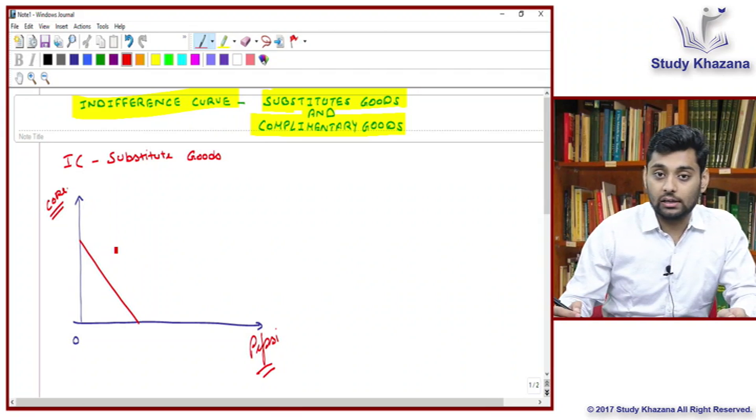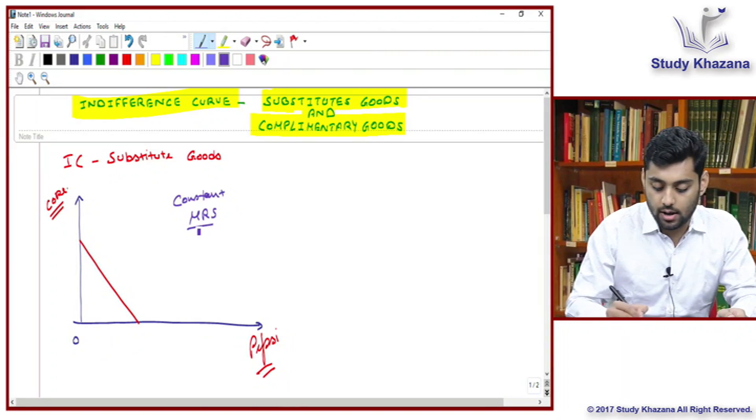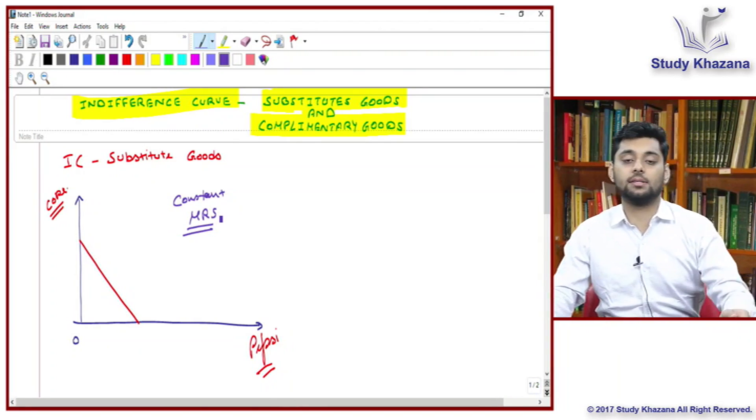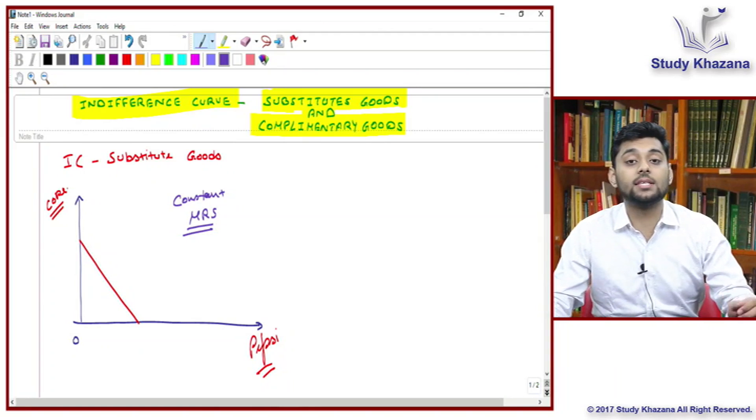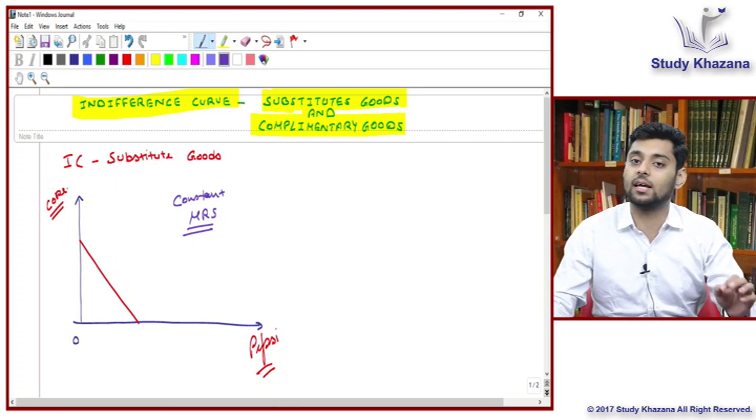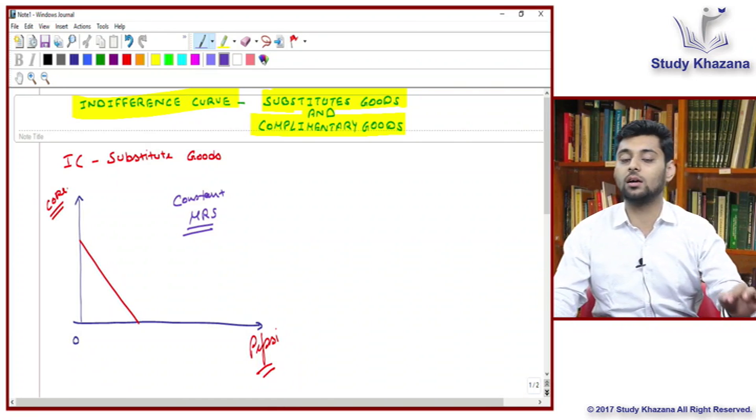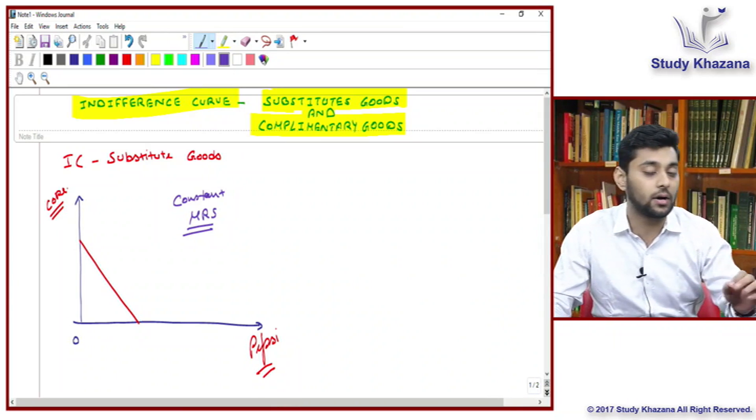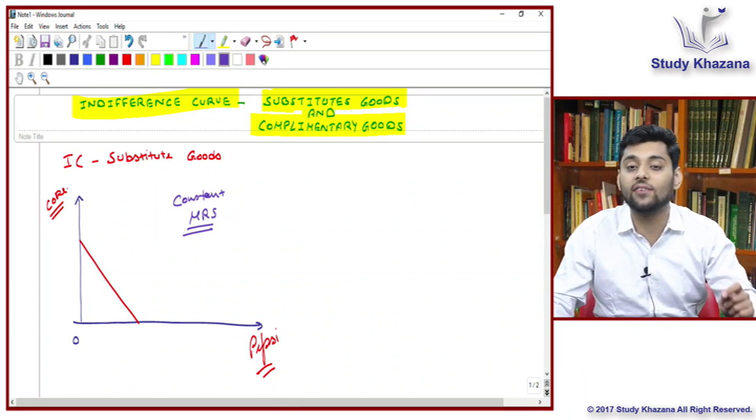When the IC is a straight line downward sloping, the reason is the constant MRS. What is MRS? MRS is the marginal rate of substitution. It basically states that if you want to increase the consumption of one good, then you have to decrease the consumption of another. So that MRS is basically a sacrificing ratio.